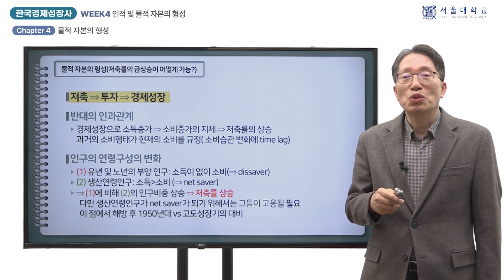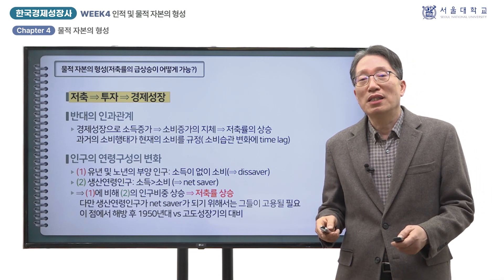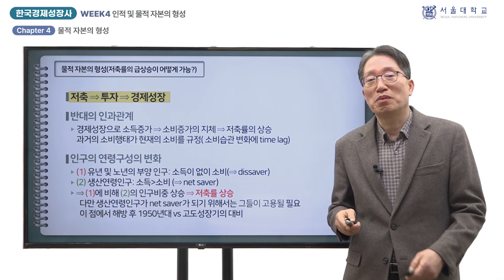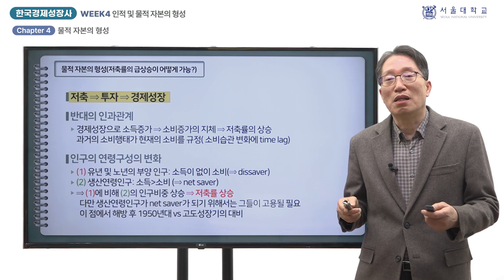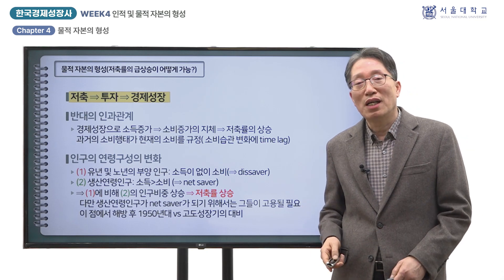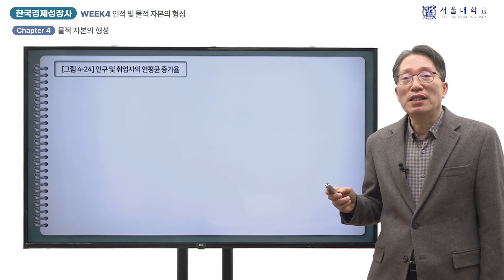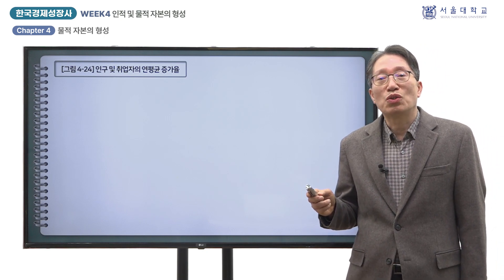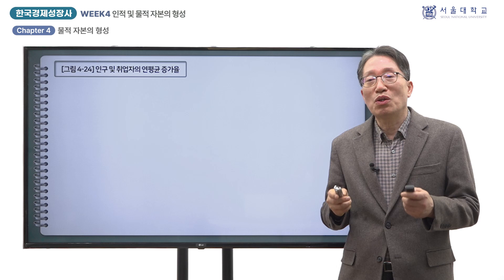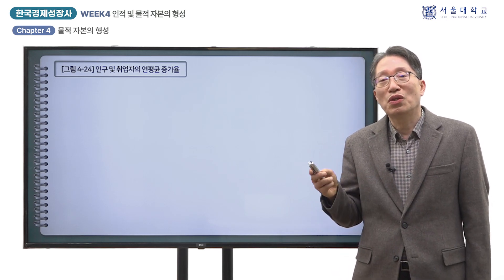부양을 받는 인구는 소득이 없이 소비만 하게 되므로 마이너스 저축자가 되고, 생산연령 인구는 소득보다 소비가 작아 순저축자가 될 가능성이 높습니다. 따라서 인구 중에서 부양인구의 비중이 떨어지고 순저축자의 비중이 높아지면 국민경제의 저축률이 높아지게 됩니다. 다만 생산연령 인구가 빠르게 늘어났다고 해서 저축률의 급상승이 반드시 실현되는 것은 아니며, 실제로 소득을 벌 기회가 있어야 합니다.